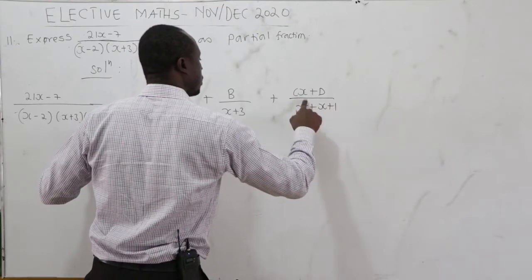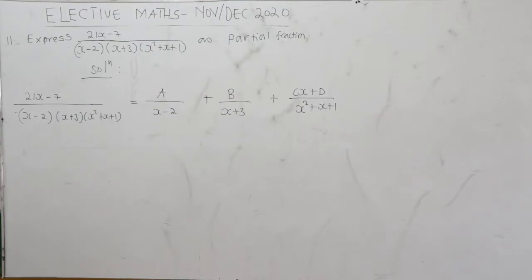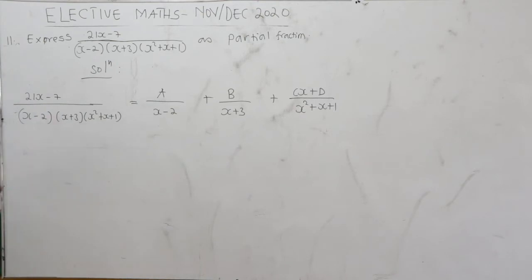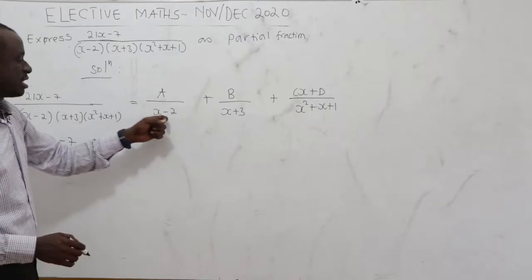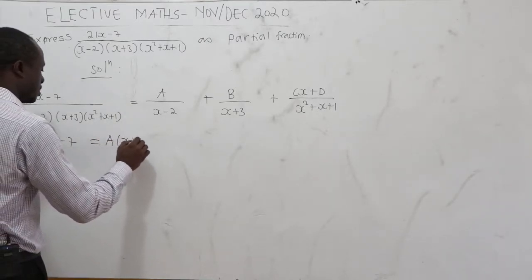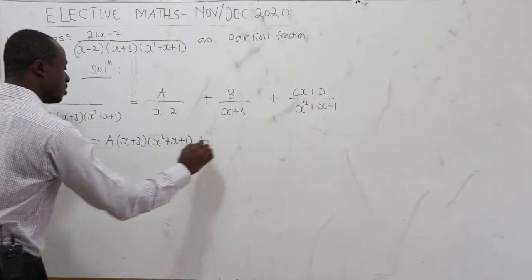The LCM is (x minus 2)(x plus 3)(x squared plus x plus 1). Multiplying each term by the LCM, everything cancels. So 21x minus 7 equals A times (x plus 3)(x squared plus x plus 1), since x minus 2 cancels.